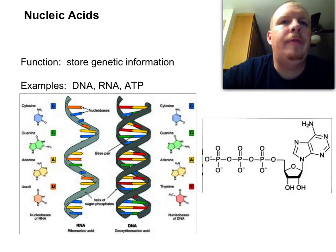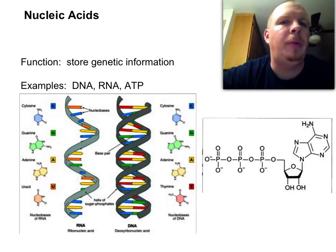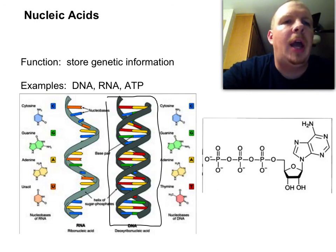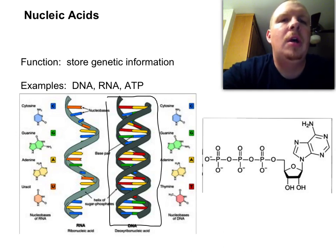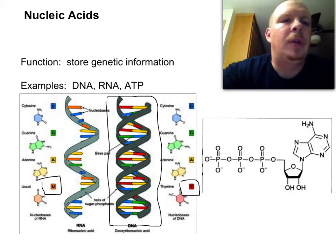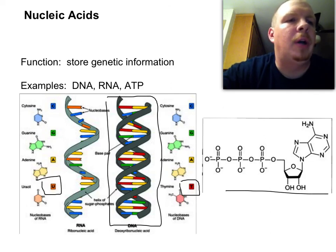The function of nucleic acids is to store genetic information — directions on how to make your cells do what they're supposed to do, and what you pass on to your offspring. Some examples include DNA, RNA, and ATP. DNA is double-stranded with sugars and phosphates on the outside and nitrogenous bases in the middle, forming a shape called a double helix. RNA is very similar to DNA but single-stranded, and one of the nitrogenous bases is different: RNA has uracil where DNA has thymine. The last example, ATP, is used for energy — when your body needs to do work, it makes this molecule. I hope that was helpful, and I will see you tomorrow!